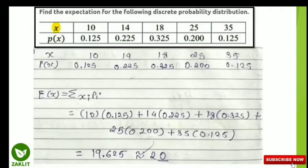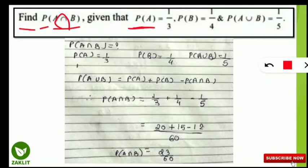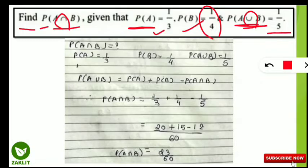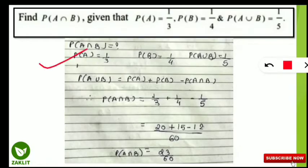The next question is also from the probability section. The question asks: find P(A∩B), that is, the probability of A intersection B. Given that the probability of A is 1/3, probability of B is 1/4, and probability of A union B is 1/5, we have to find the probability of A intersection B. Don't get confused between union and intersection — a simple formula will show us how to find this value.